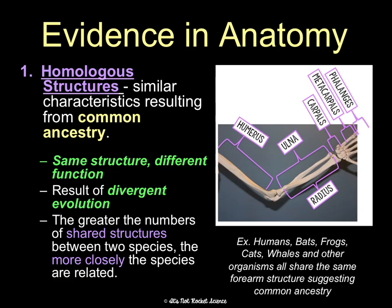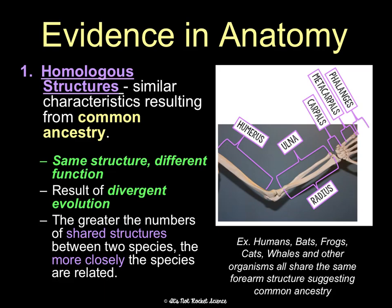For example, humans, bats, frogs, cats, whales, and many other organisms all share the same forearm structure, which suggests evidence of common ancestry. Here is a picture of a human arm with its parts labeled: the humerus, the radius and ulna in the forearm, the carpals around the wrist, the metacarpals — the part of your hand where you can see bones when you stretch your hand — and then the phalanges, which are your fingers. We can see this exact same orientation and layout of bones in the forelimbs of all these other organisms, which suggests homologous structures and divergent evolution.